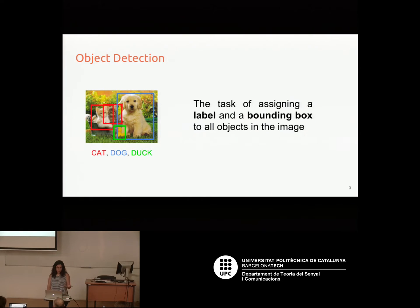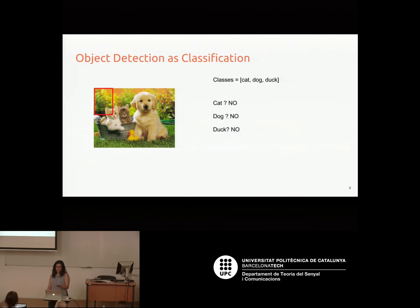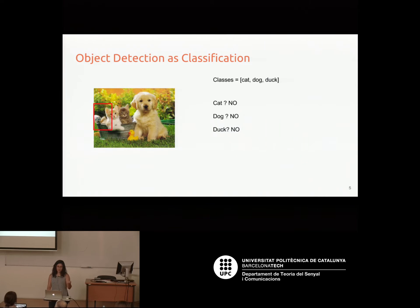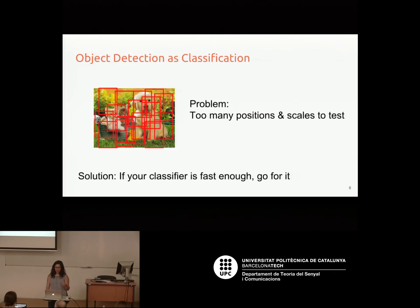One way to address object detection is to treat it as a classification problem: you pick a region or bounding box, place it somewhere in the image, and evaluate the classifier there — checking if there's a cat, a dog, a duck, or none of those. You move the bounding box around and repeat. You soon realize you have to do this for many bounding boxes at different scales and aspect ratios.